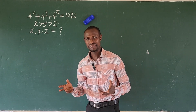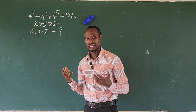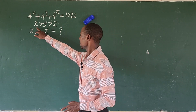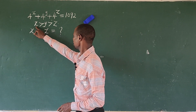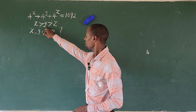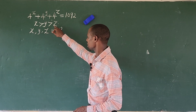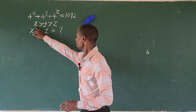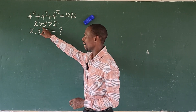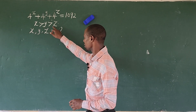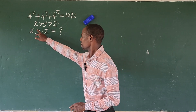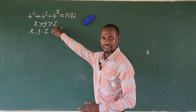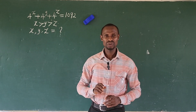Now, here we are given a condition. The condition says that x is greater than y, greater than z. In other words, x is greater than y, and y is greater than z. So in all, x is greater than z also.